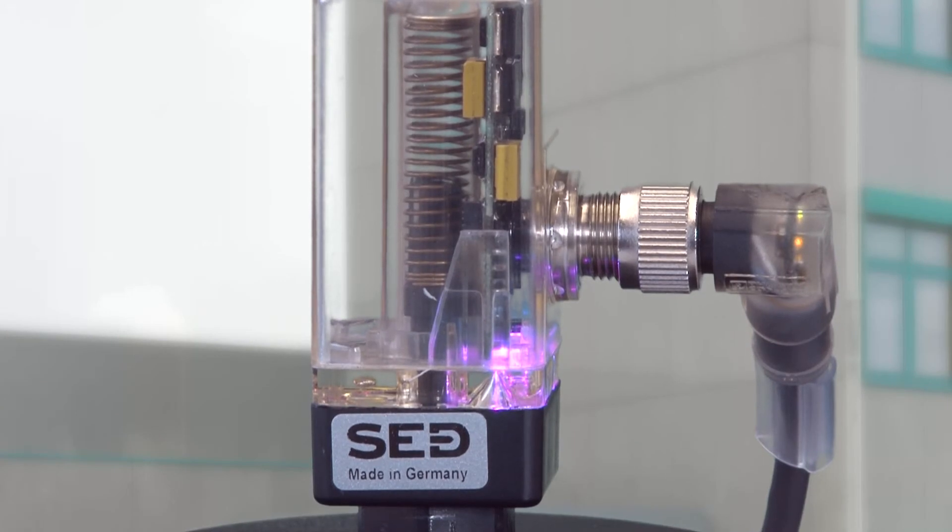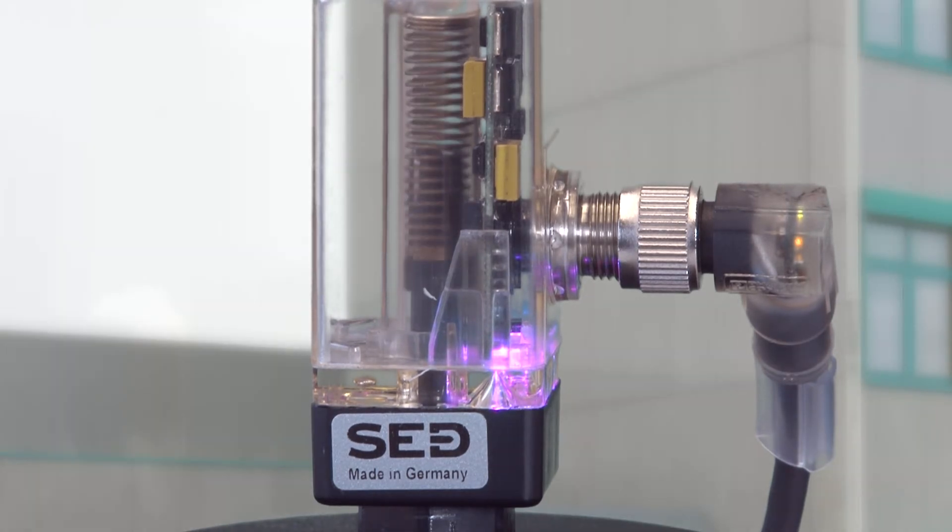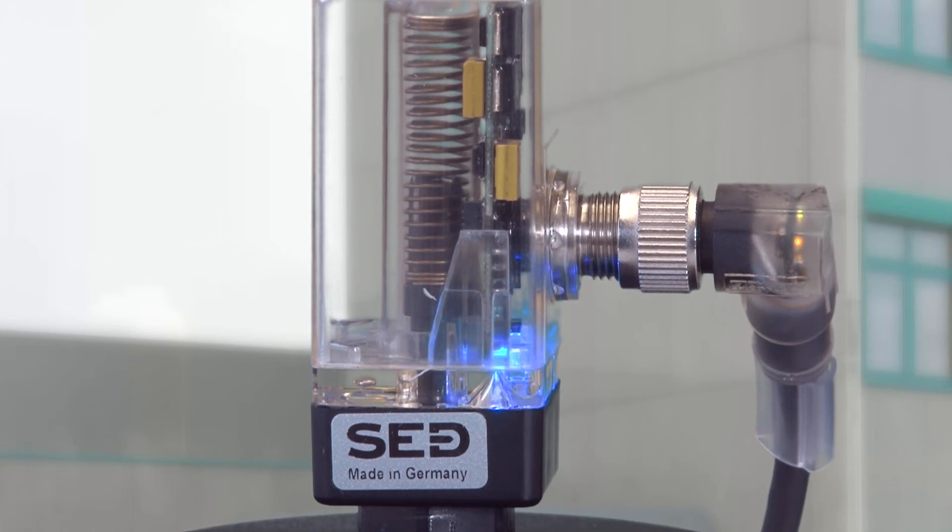Open the valve and hold this position until the LEDs shine permanently violet. Close the valve to finish the programming. The end of the programming is indicated by a change in colors. The electrical limit switch shines blue and is now ready for use.